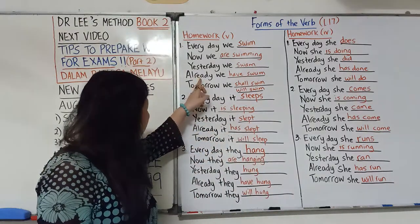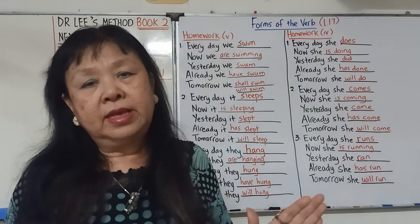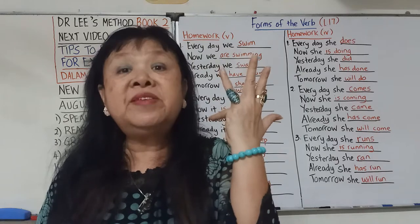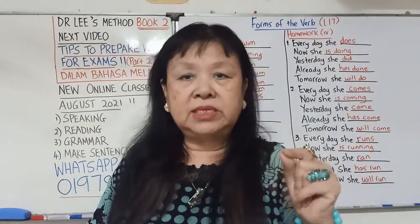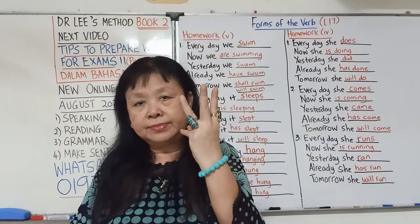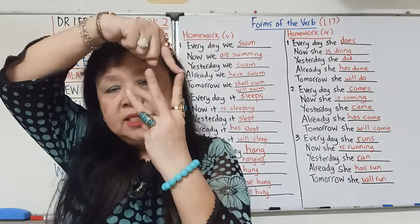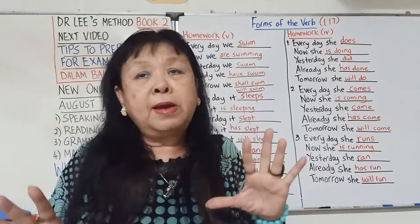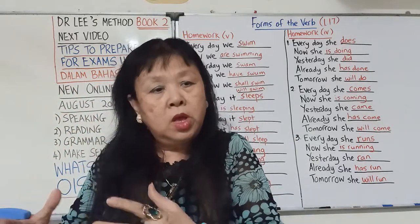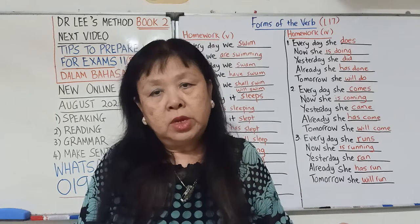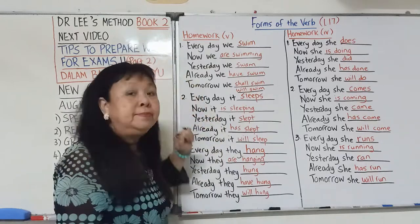Already we have swum。当我们用already，它叫做present perfect tense。Present perfect tense，I、you、we、they用have，he、she、it用has。在have跟has的后面，我们用一个past participle。Past participle是动词的第三个位，比如eat、ate、eaten，eaten叫做past participle。我们用present perfect tense代表一个动作我们做了，但是没有提什么时候做，只是看到它的成果，或者这个事情刚刚做不久。